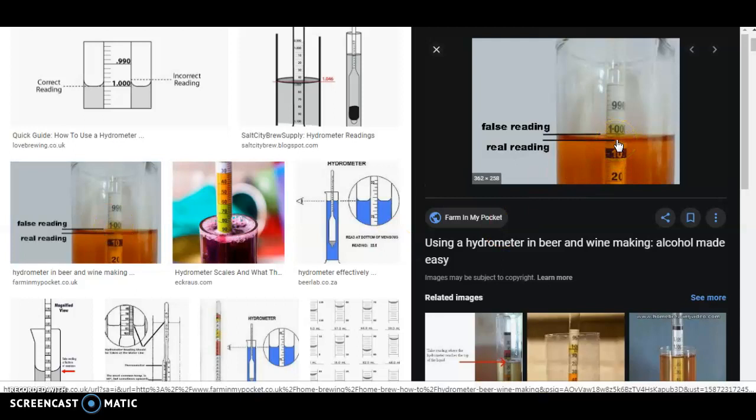Now you'll see this one's fermented down. 1.000 is the consistency of water. Wine will go below that because it ends up more alcohol in it than water, but for a beer or a cider - a cider goes down to 1.000, but for a beer it will not get any lower than about 1.002 to 1.004.